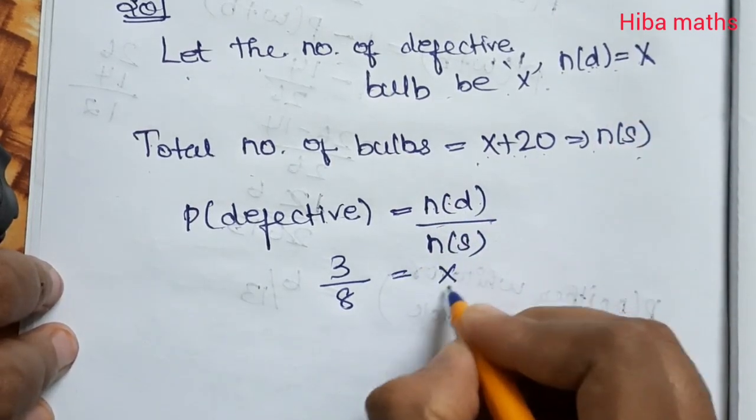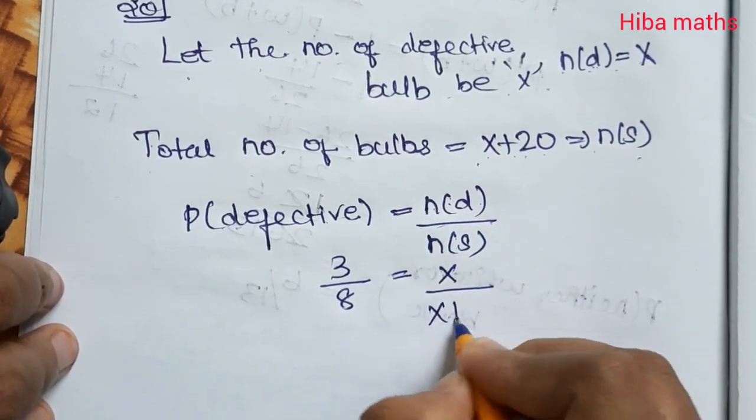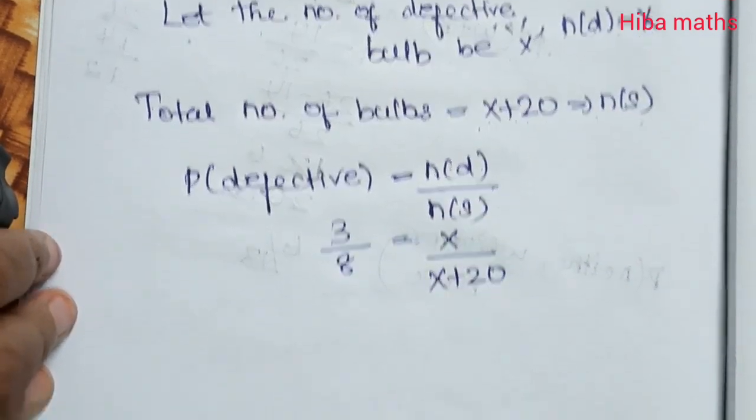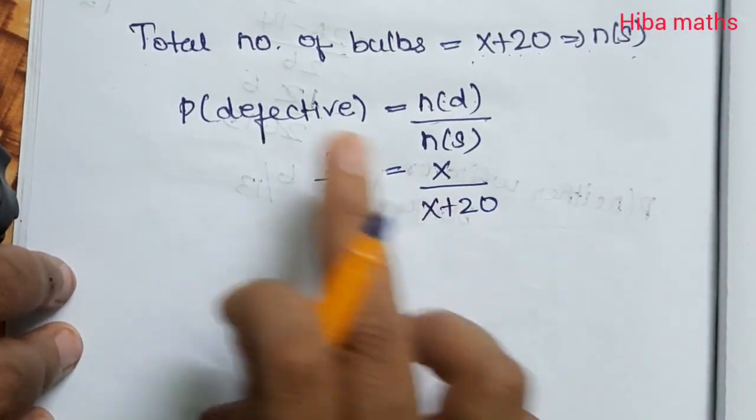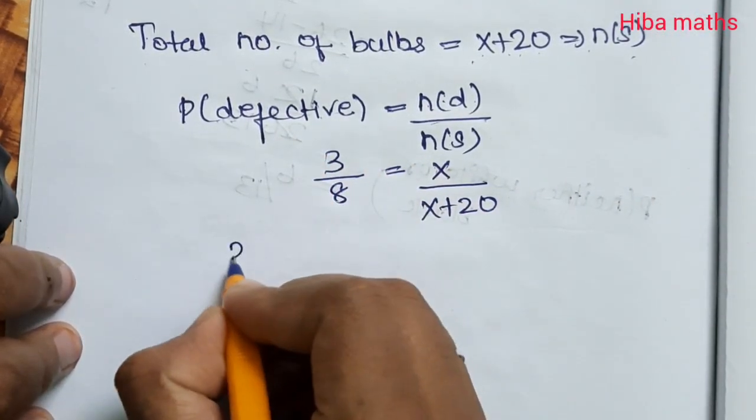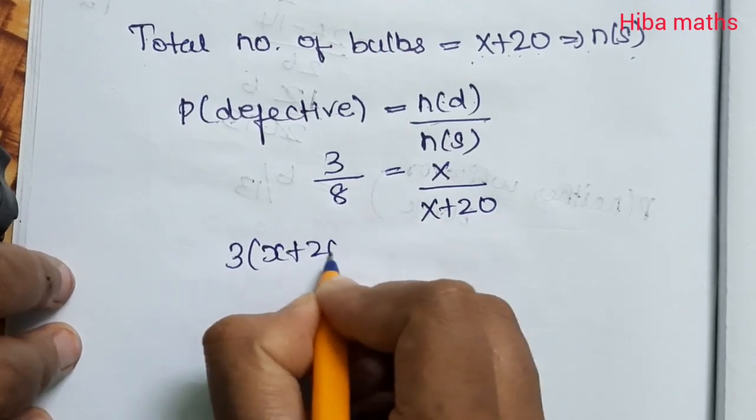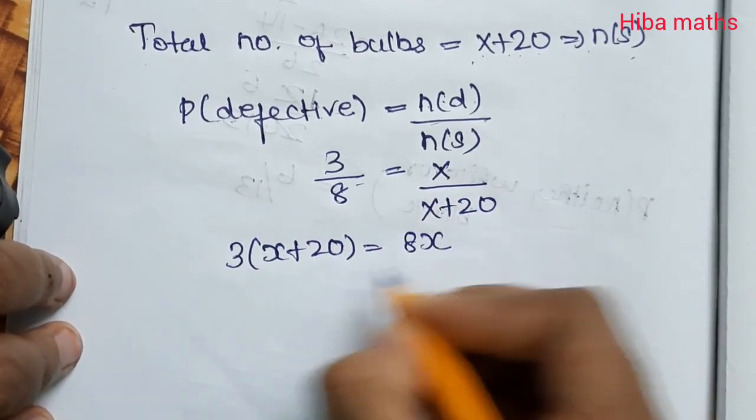n(d) is x, n(s) is x + 20. Now cross multiply: 3(x + 20) = 8x.